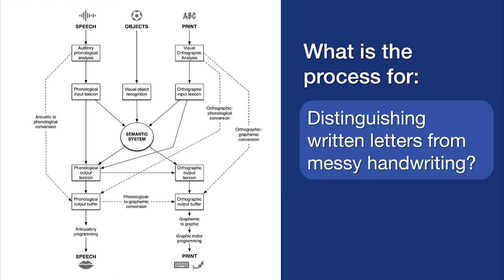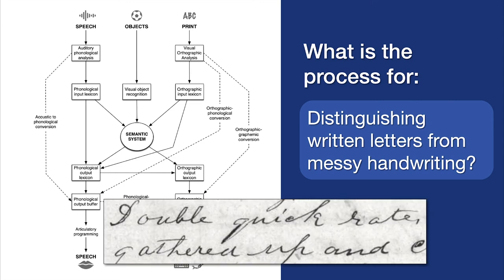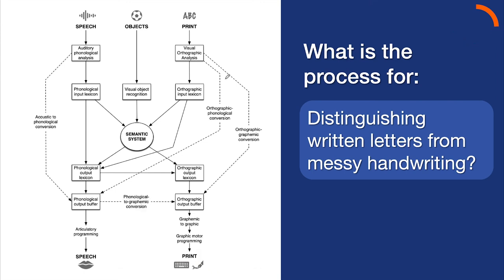Second: what process is distinguishing written letters from someone's messy handwriting? What process do you use to look at this and understand what the letters are — when grandma writes you a card it takes you a few minutes? You do it by having a visual input from the print and using visual orthographic analysis. Even though that handwriting might be loopy or messy, you're able to pull out what the letters should be.